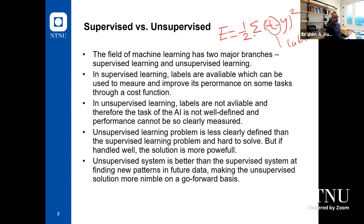In unsupervised learning, labels are not available, we don't have such labels, and the task of the AI is not well-defined, and the performance cannot be measured. If it is labeled, we can have this cost function, use error backpropagation, and use gradient descent to adjust the weights to minimize this cost function. But in the case of unsupervised, we don't have those labels, so we don't have that kind of function.